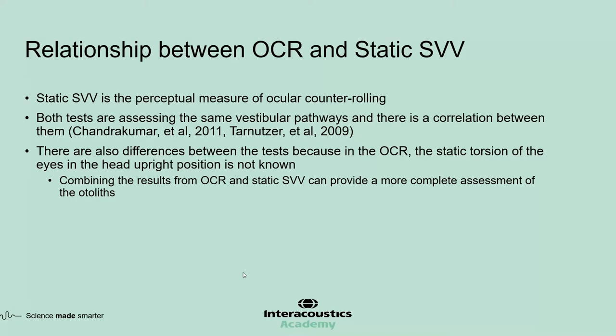We don't know what the torsion was before the lesion. But the static SVV test is actually designed to provide changes in the perception of vertical before and after the lesion. By combining the results of the OCR and the static SVV test, we might be able to identify asymmetries during OCR testing and better identify the side of lesion.